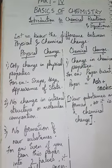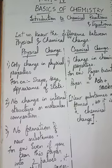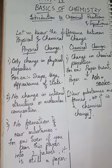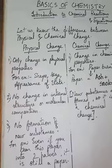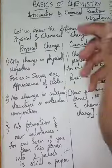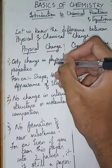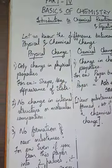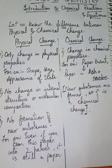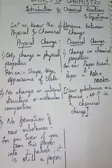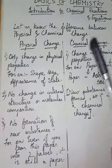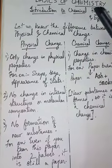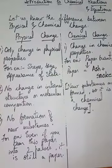Physical change only involves changes in physical properties — for example, shape, size, appearance, or state. Like the shape of any metal, or its size, or appearance. If there is a change in those kinds of things, that is a physical change.